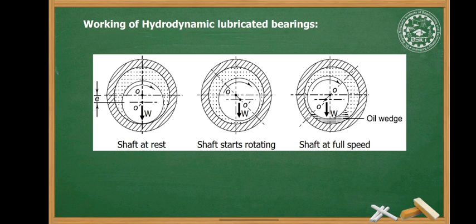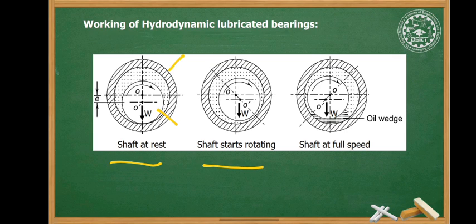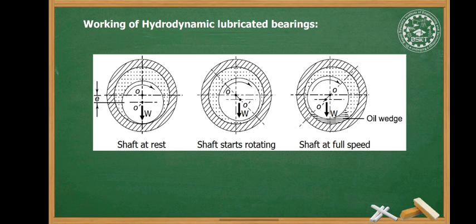Let's see the working of hydrodynamic lubricated bearings. There are three figures shown. In the first figure, we have the supporting element and the shaft, where W is the weight of the shaft and small e is the eccentricity. In the first case, the shaft is at rest, and both the shaft and bearing are in contact due to the self-weight.